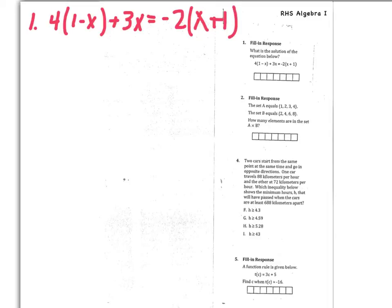So when you distribute, make sure that you multiply the 4 to both of the things inside, so that's going to give you 4 minus 4x. And on the right-hand side, I have to multiply negative 2 to both of the things inside, so that will give negative 2x and then minus 2.